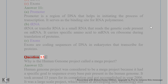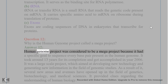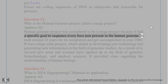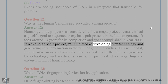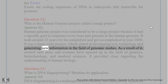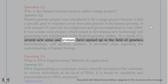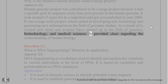Question 12. Why is the Human Genome Project called a megaproject? Answer 12. The Human Genome Project was considered a megaproject because it had a specific goal to sequence every base pair present in the human genome. It took around 13 years for its completion and was accomplished in the year 2006. It was a large-scale project aimed at developing new technology and generating new information in the field of genomic studies, opening several new areas in genetics, biotechnology, and medical sciences.